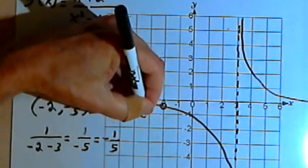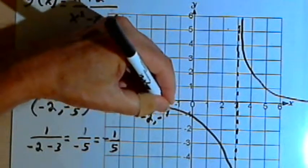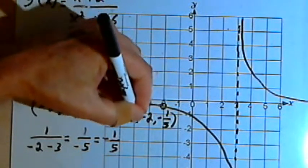And I should also label that point negative 2, comma, negative one-fifth.